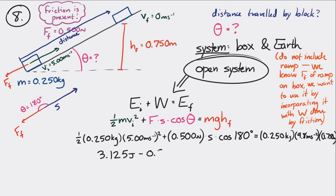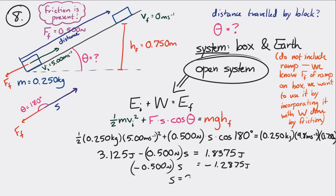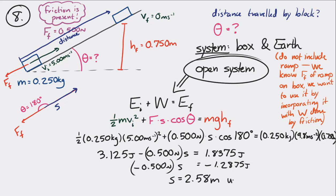Solving for the displacement: 2.58 meters. If it's displacement it should have a direction, so 2.58 meters up the ramp. However, the problem asks about distance, so we don't need to give the direction. Distance is a scalar — distance is 2.58 meters.